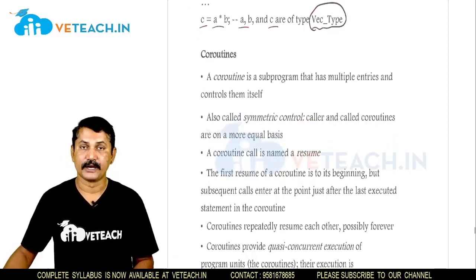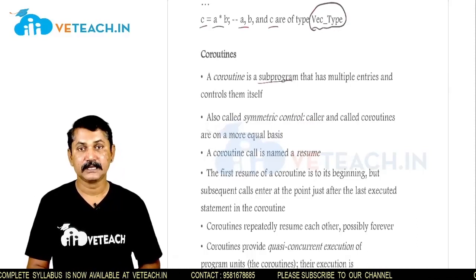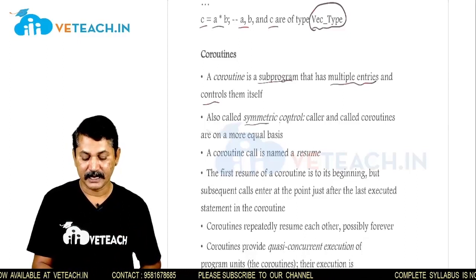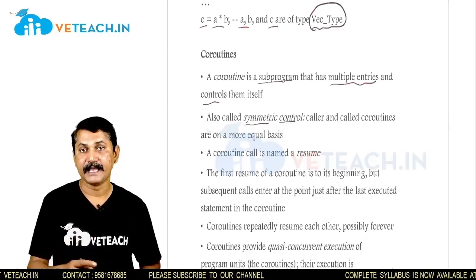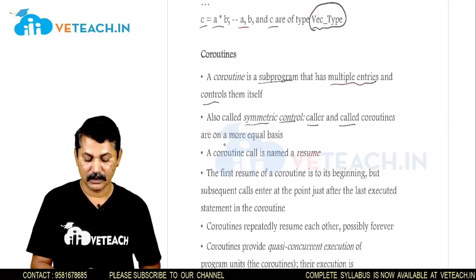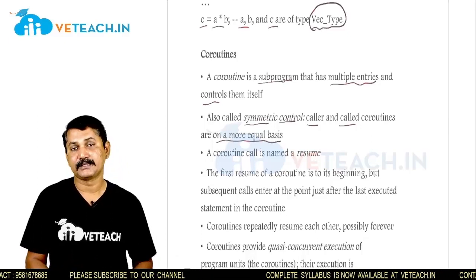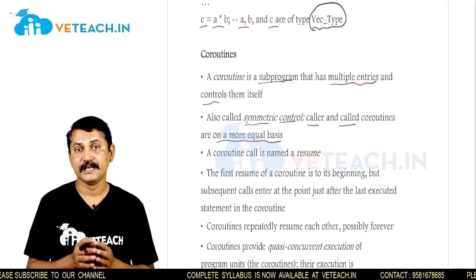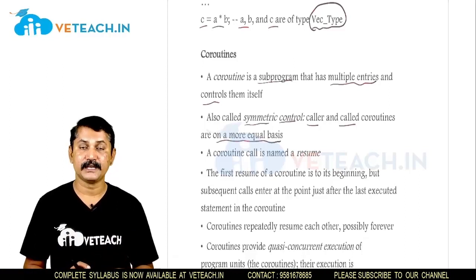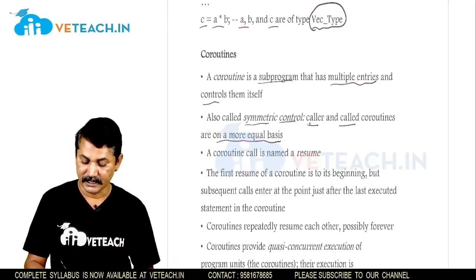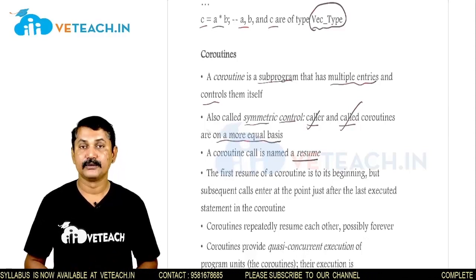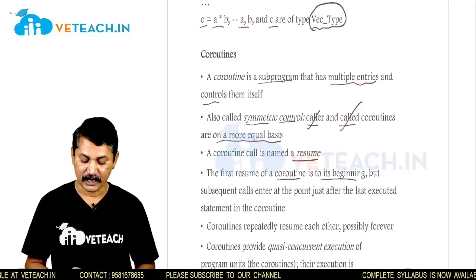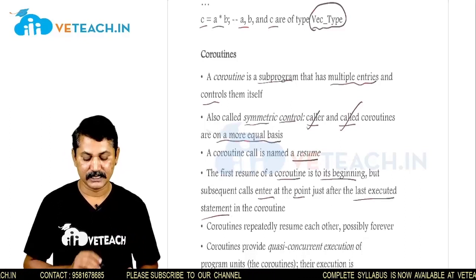The next topic is coroutines. A coroutine is a subprogram that has multiple entries and controls them itself — also called symmetric control, meaning the control of coroutines is managed by themselves. Caller and called routines are on a more equal basis, unlike regular subprograms where control is on the called program. A coroutine call is named resume. The first resume of a coroutine begins at its start, but subsequent calls enter just after the last executed statement.